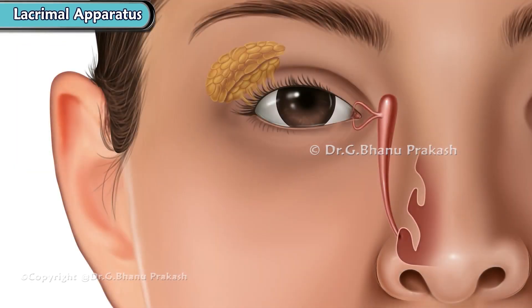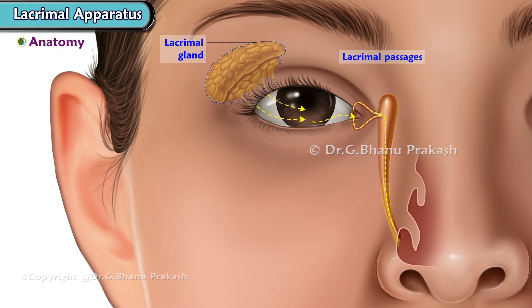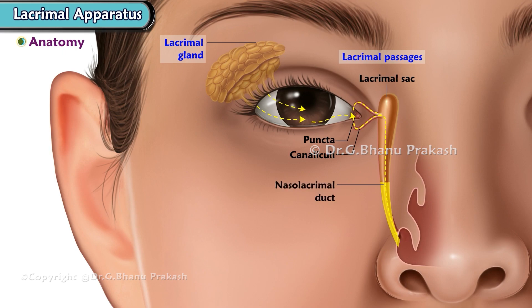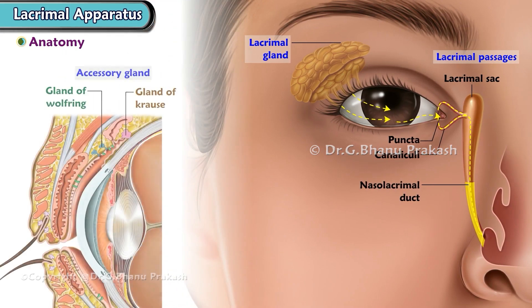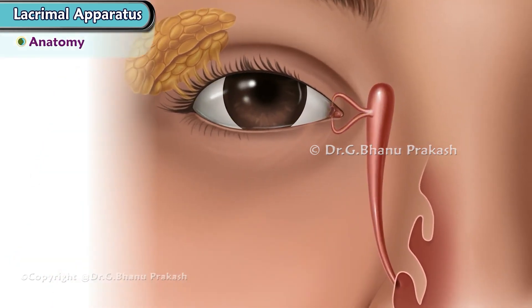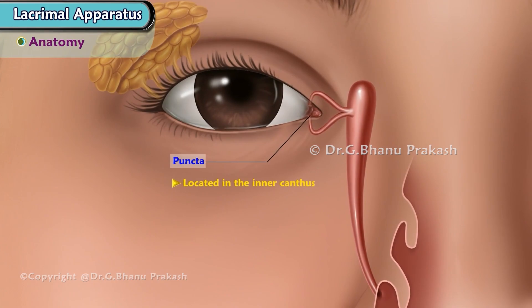Lacrimal Apparatus Anatomy. The lacrimal apparatus constitutes of the main lacrimal gland, lacrimal passages, puncta, canaliculi, lacrimal sac, nasolacrimal duct, and accessory glands. The lacrimal puncta is located in the inner canthus.